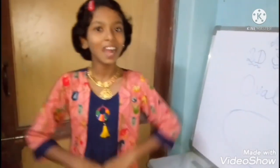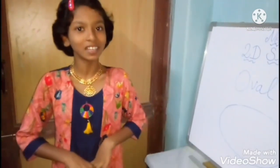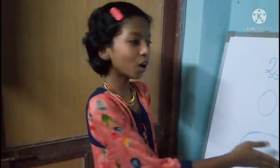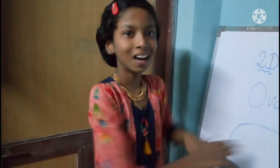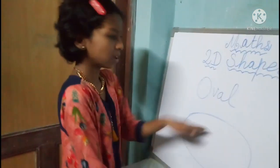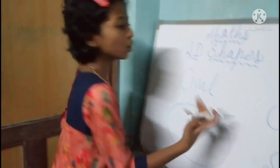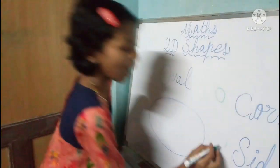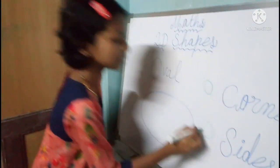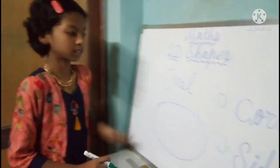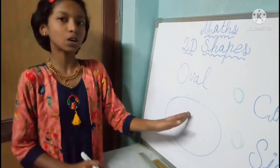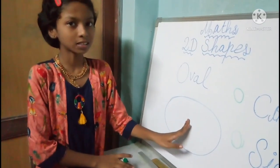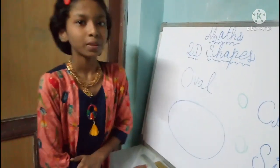Now I have drawn here one shape. Oval. Oval has no corners — zero corners — and zero sides. Oval has zero corners and zero sides.